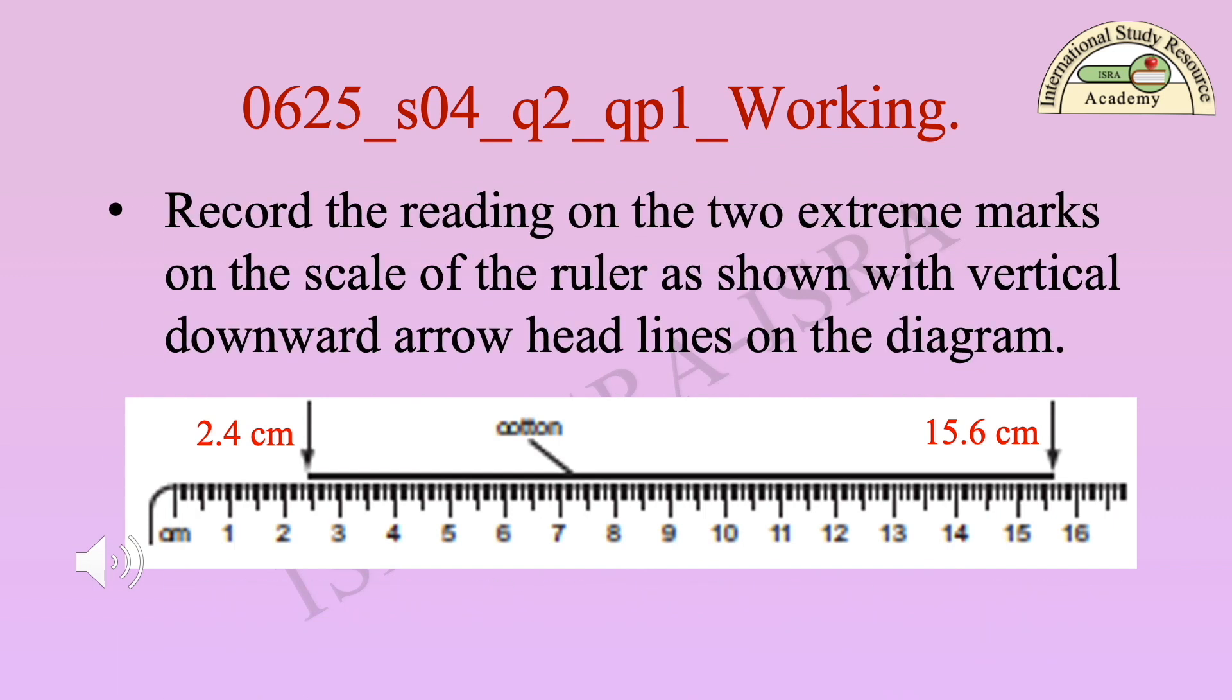Working step 1: Observation. Record the reading on the two extreme marks on the scale of the ruler as shown with vertical downward arrowhead lines on the diagram. Reading of points are also shown here to help you.